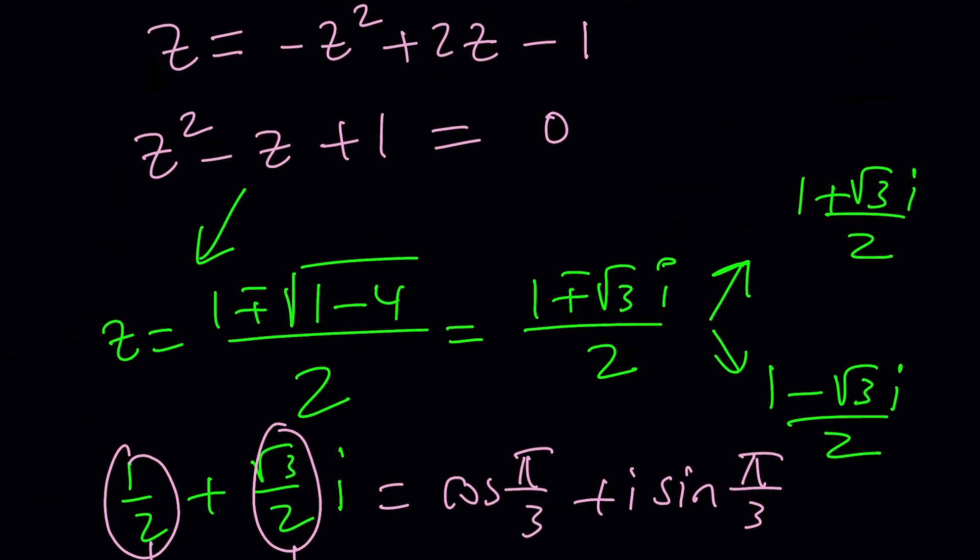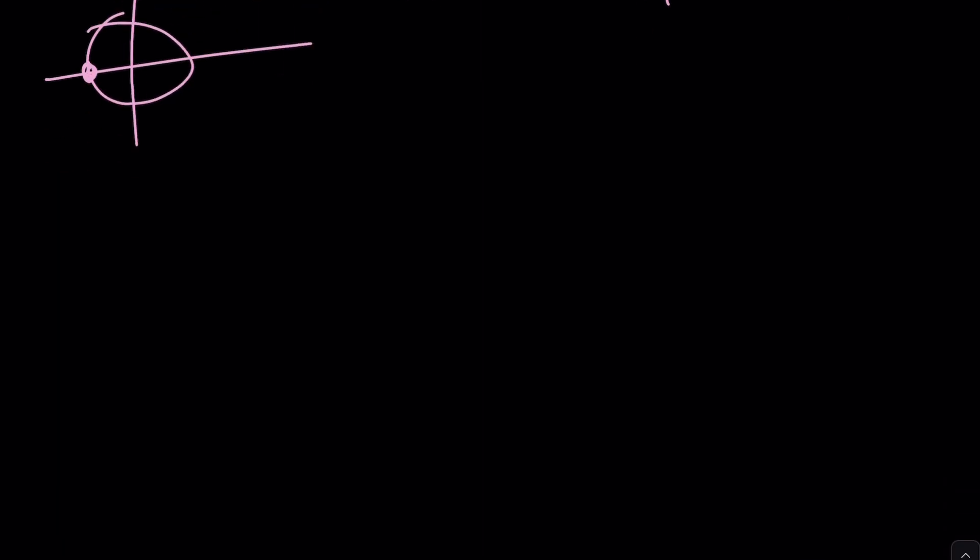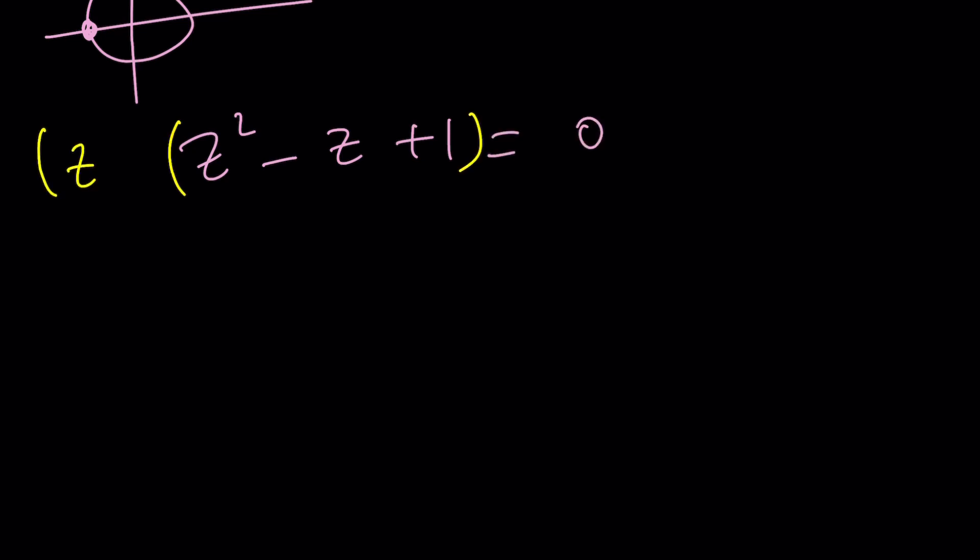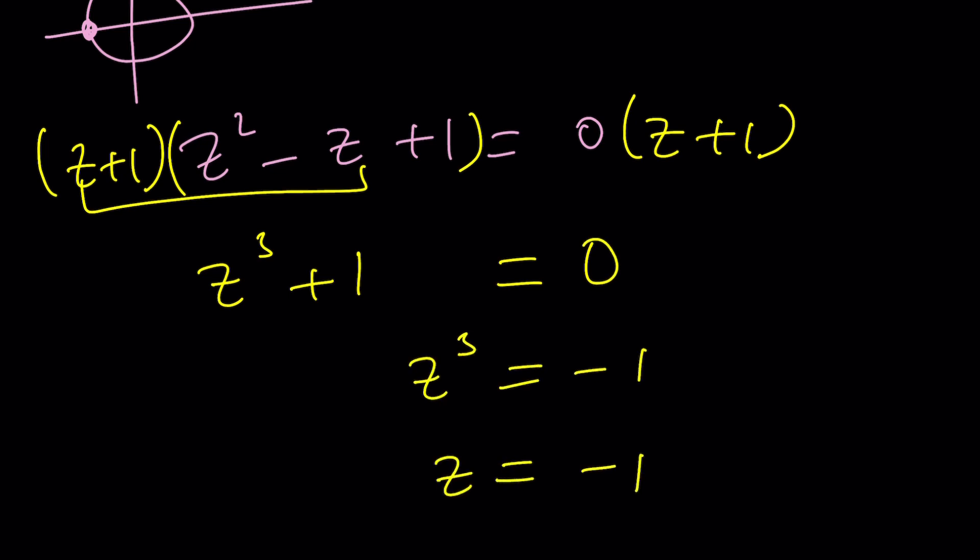But you could also get this solution in a different way because of the speciality, specialness of this equation. Why is it so special? Let me show you. This is really cool. So this is equal to 0, right? I'm going to go ahead and multiply both sides by z plus 1. Right? Quick. And this left-hand side, when distributed, gives you z cubed plus 1. You know why? Because it's sum of two cubes. Yay! This means z cubed is negative 1. Doesn't that mean z equals negative 1, though? You've got to be careful.